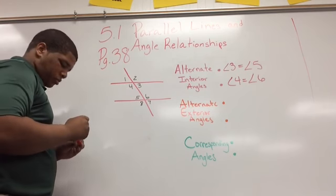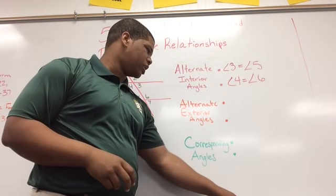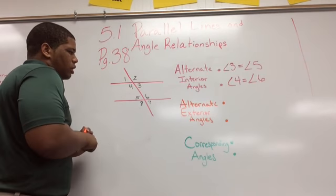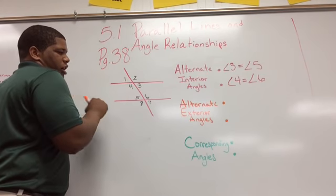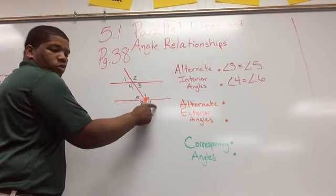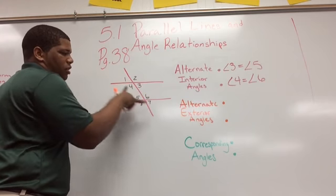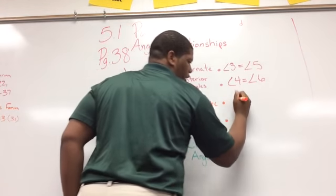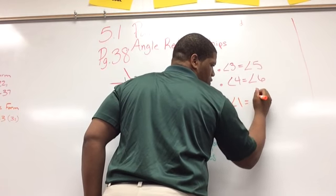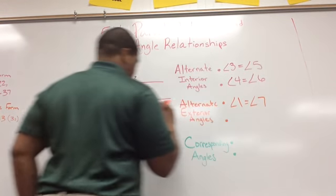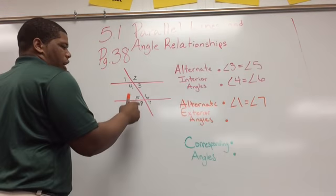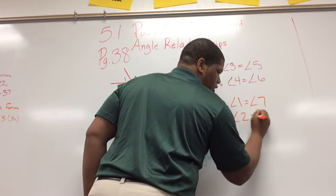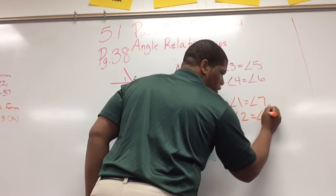Now let's go to our alternate exterior angles. My alternate exterior angles would be angles 1 and 7, because both of them are on the outside and on opposite sides of the transversal. So angle 1 equals angle 7. And angles 2 and 8 — angle 2 equals angle 8.